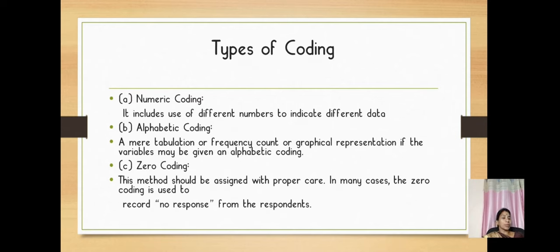Types of coding include numeric coding, alphabetic coding, and zero coding. Numeric coding includes use of different numbers to indicate different data. Alphabetic coding indicates the tabulation or frequency count or graphical representation. Zero coding is assigned with proper care. In many cases, the zero coding is used to record no response from the respondent. When you do not have any response for a particular question, then the zero coding will be used.